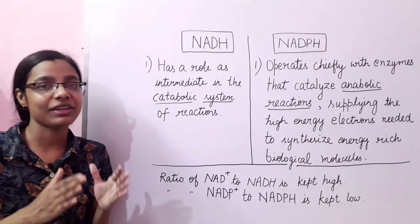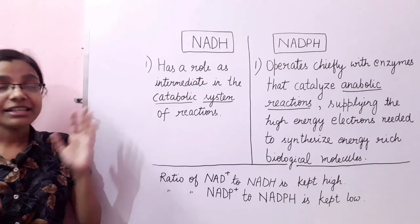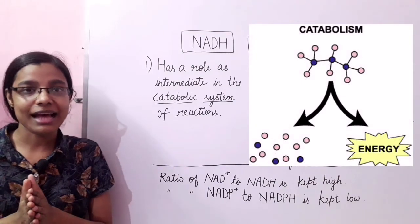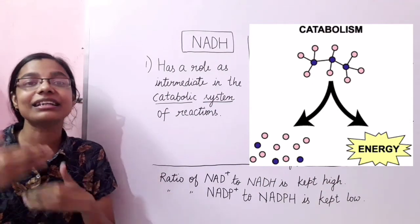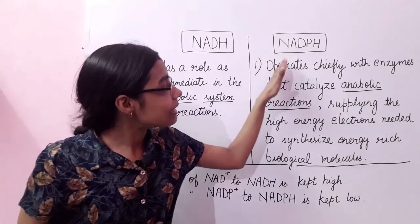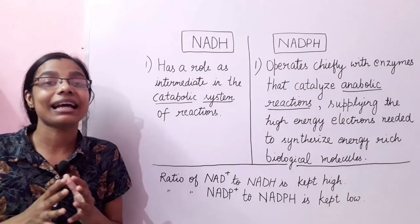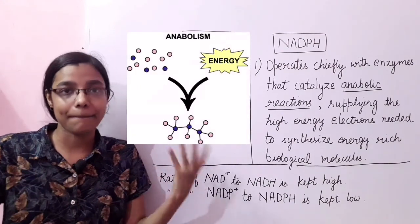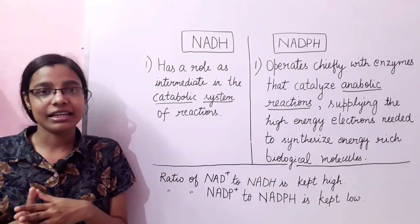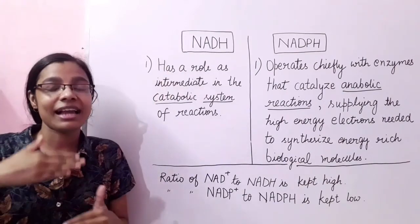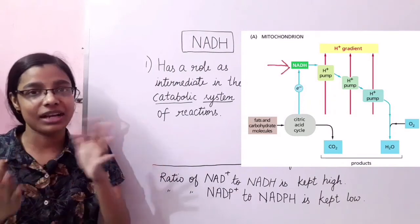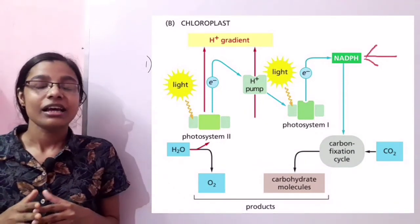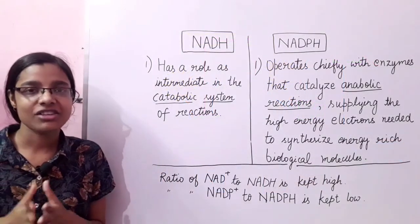NADH has a role as an intermediate in catabolic reactions, which involve the breakdown of complex substances that leads to the release of energy. However, NADPH operates chiefly with enzymes that catalyze anabolic reactions — reactions that involve the synthesis of complex biochemical compounds. That is the major difference between NADH and NADPH. You will see NADH in the respiration process, particularly in glycolysis and the Krebs cycle, while NADPH and NADP are seen in photosynthesis in plants.